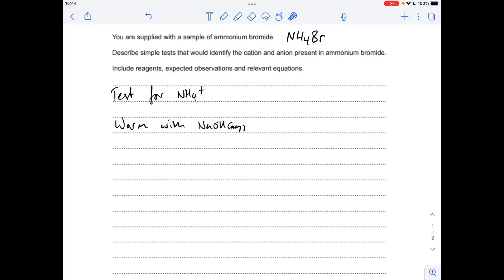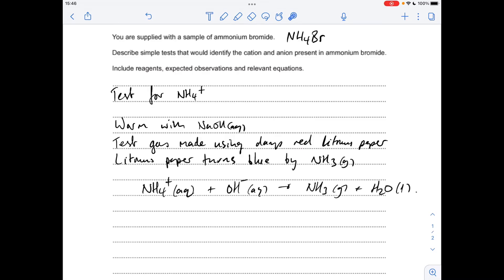You would hold some damp red litmus paper at the mouth of the test tube and test the gas that's coming off the reaction. If the ion in the tube is the ammonium ion, it will liberate ammonia which will turn this red litmus paper blue. There's the equation for that reaction and there's the ammonia gas that's turning the litmus blue.